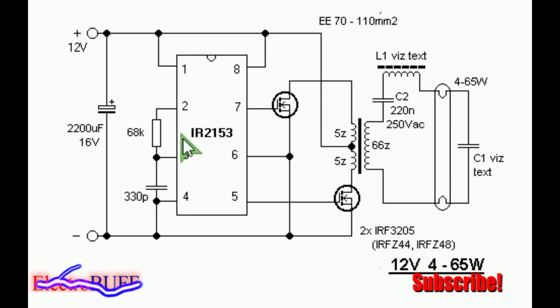The frequency is determined by the value of this timing resistor and capacitor connected across pin 2, pin 3, and pin 4, the ground pin. So the parameters are shown, the frequency should be about 40 kHz.